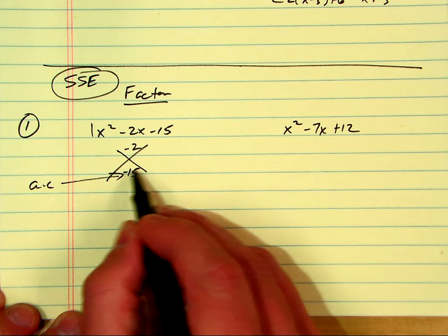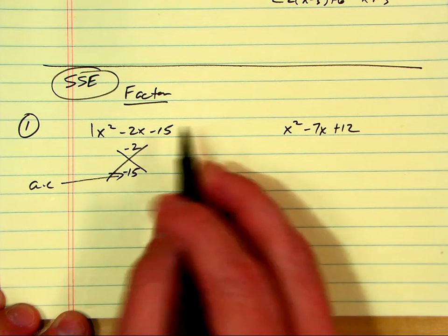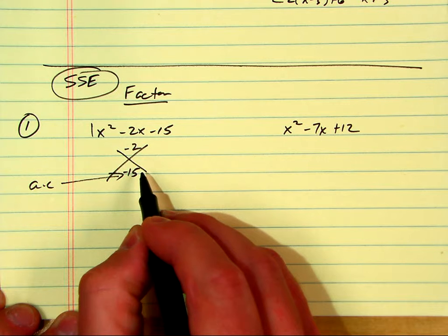Okay, what are the factors that multiply to get this, but add up to get this? Anybody? Negative 5. Yep, negative 5 and positive 3.